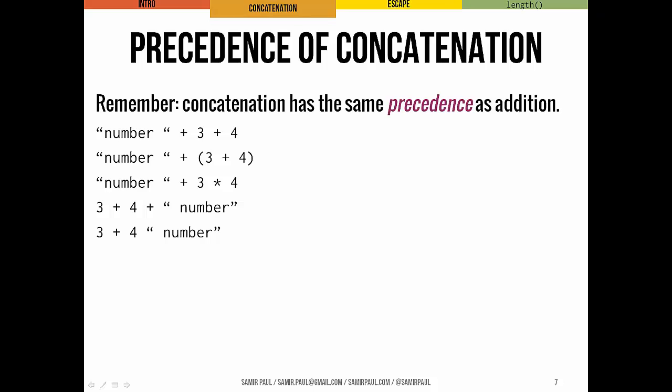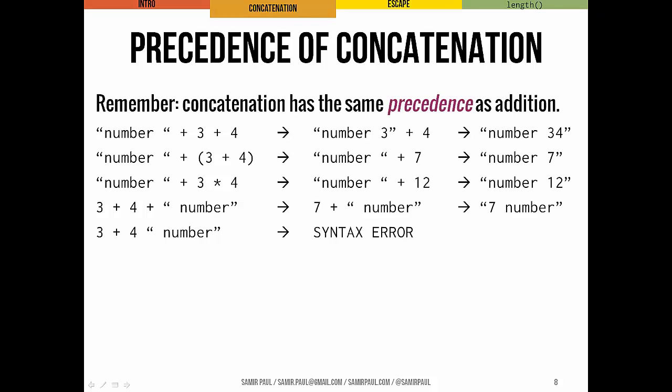Keep in mind that concatenation takes the same precedence as addition. In the first example, number plus 3 plus 4: the number and the 3 are concatenated left-to-right, giving "number3", then plus 4 gives "number34". In the second example, parentheses change evaluation order, giving "number7". Third example: multiplication still has higher precedence, so we end up with "number12". Fourth example, 3 plus 4 plus number going left-to-right gives 7, then concatenated with number gives "7number". Finally, 3 plus 4 then number — that's just a syntax error.